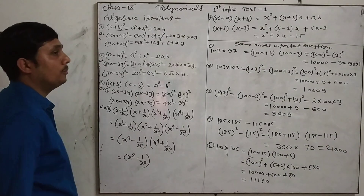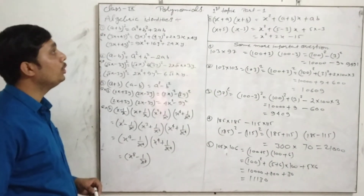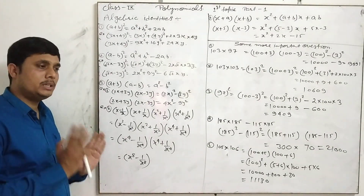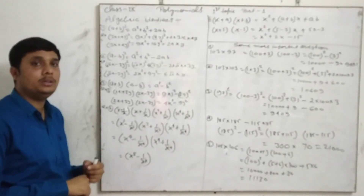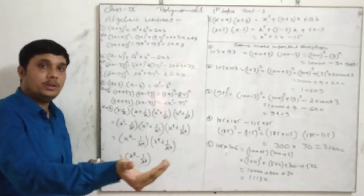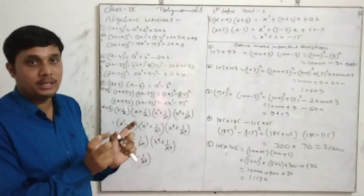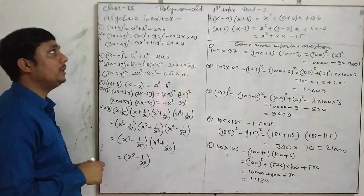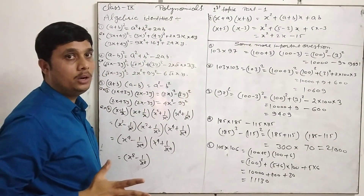Good morning friends. Now we are going to start chapter number two of NCERT Polynomials. Polynomials is basically divided into two parts: first is how to simplify an equation which is given in multiplied position, and second is factorization — the reverse process where a given equation is multiplied to get the result. We are starting with the first topic: algebraic identities.